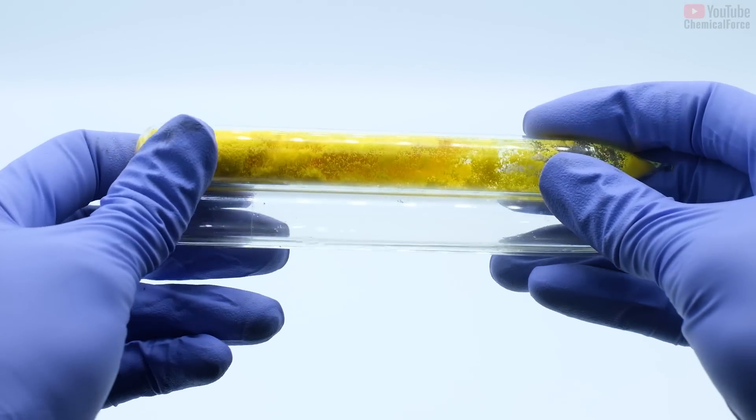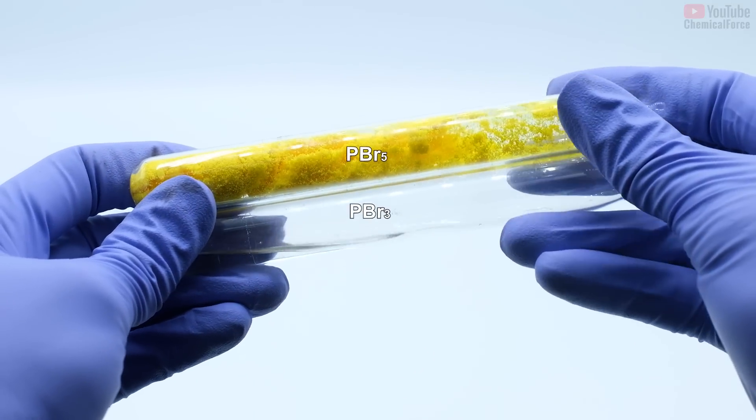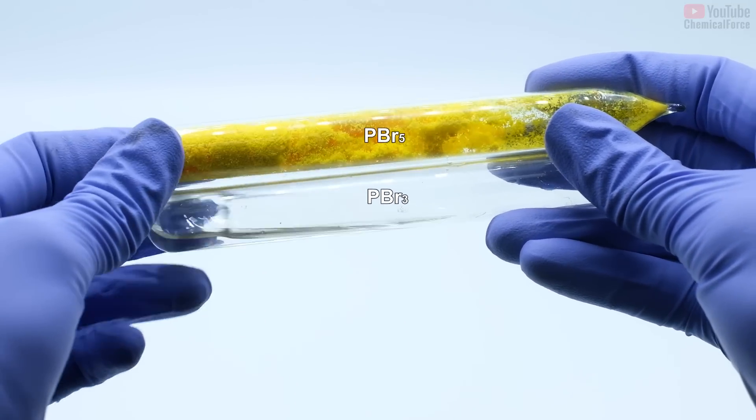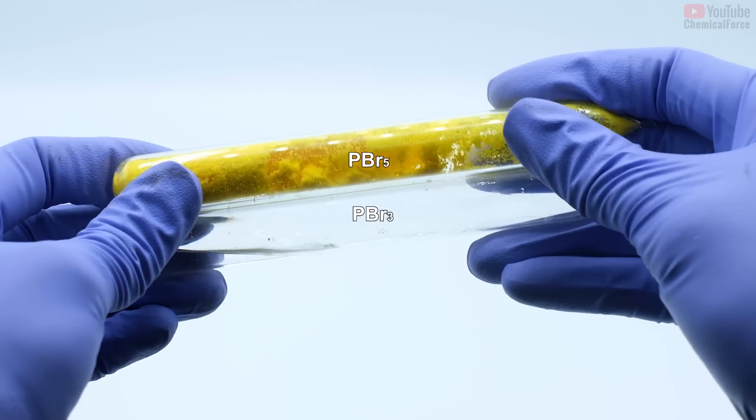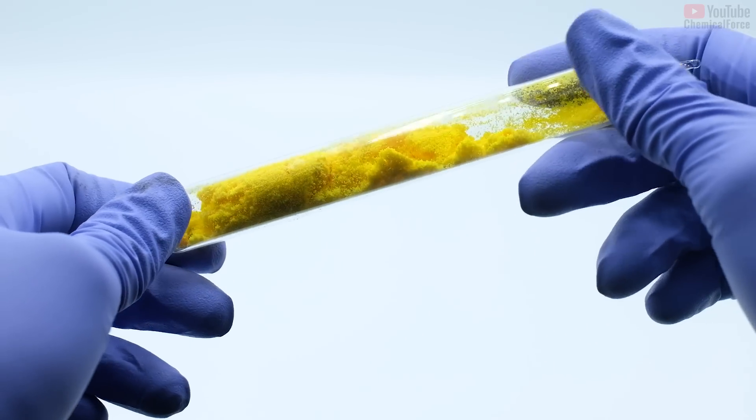I'm holding ampoules with these reagents. The liquid one is phosphorus tribromide, and phosphorus pentobromide is a yellow powder that this video will be about.